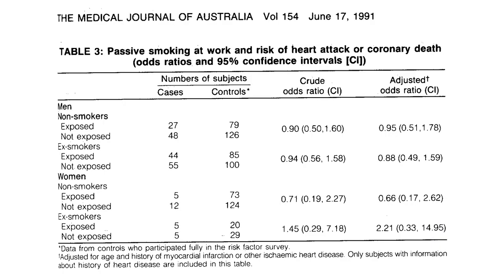Here is an example: passive smoking at work and risk of heart attack or coronary death. The table shows the crude odds ratio and the adjusted odds ratio — adjusted for several baseline characteristics of the study participants. There is a slight difference between the crude and adjusted odds ratios. This is how we control for potential confounders at the analysis stage using regression models, to arrive at a more robust estimate of the association between an exposure and an outcome of interest.